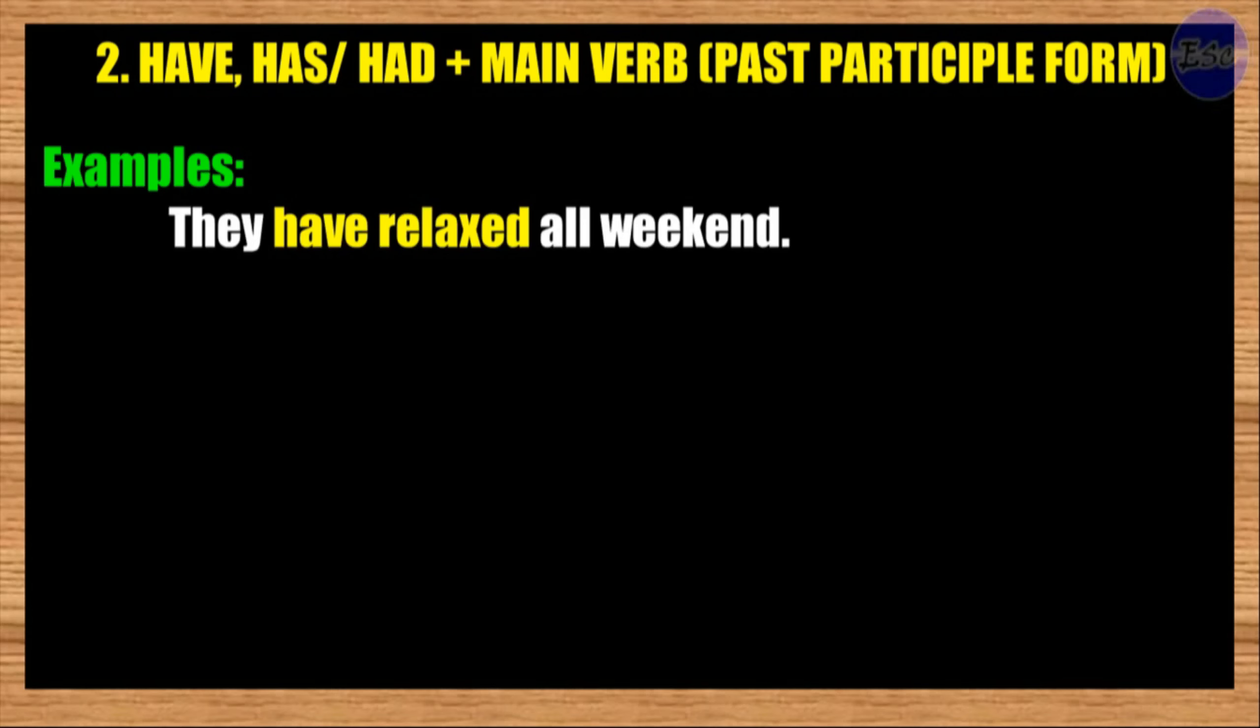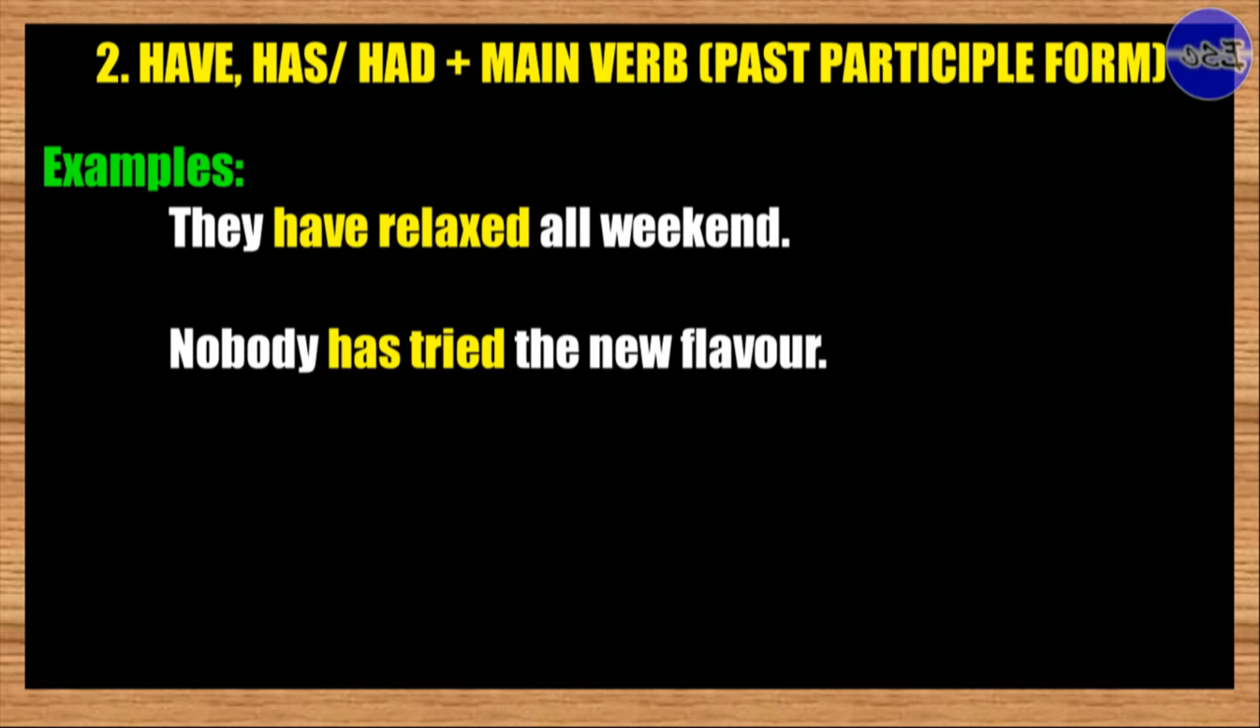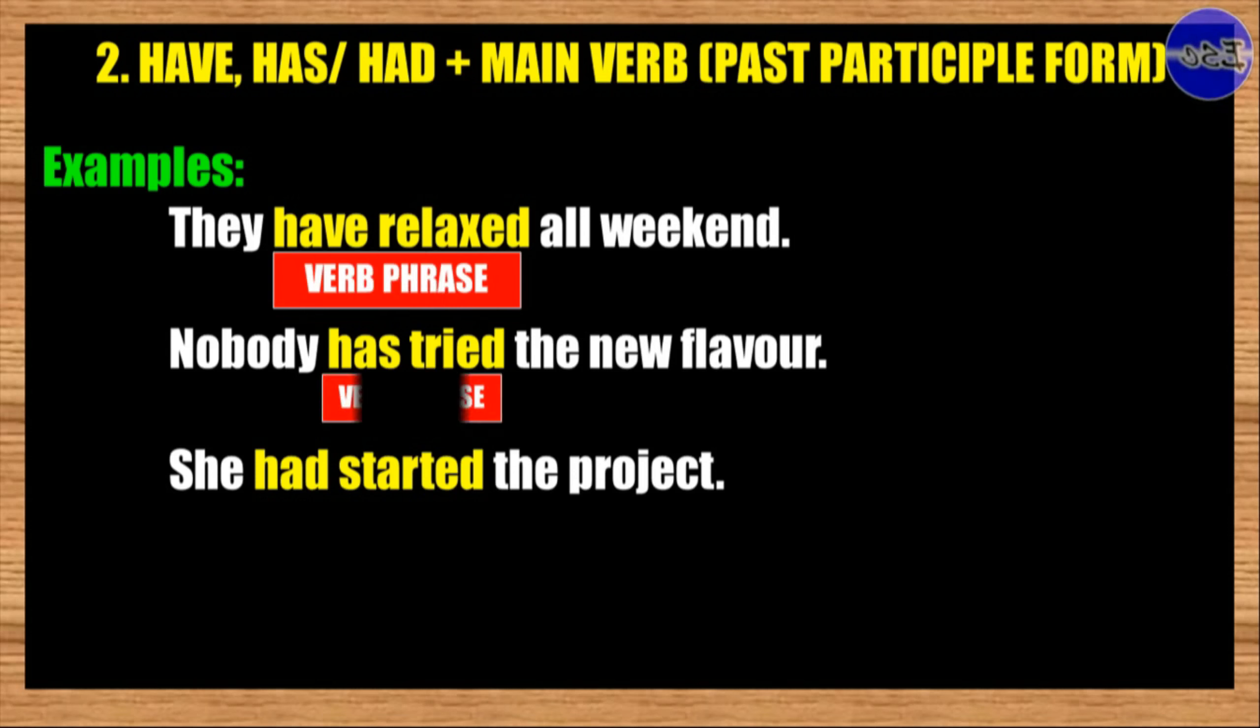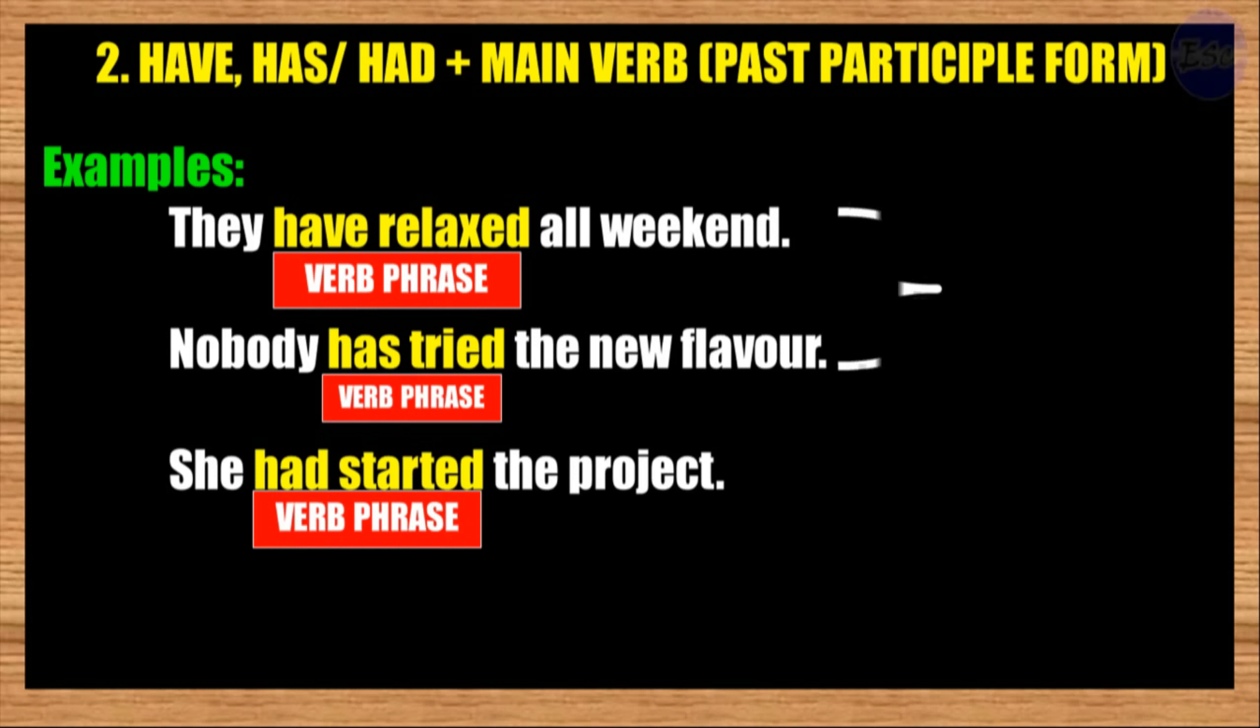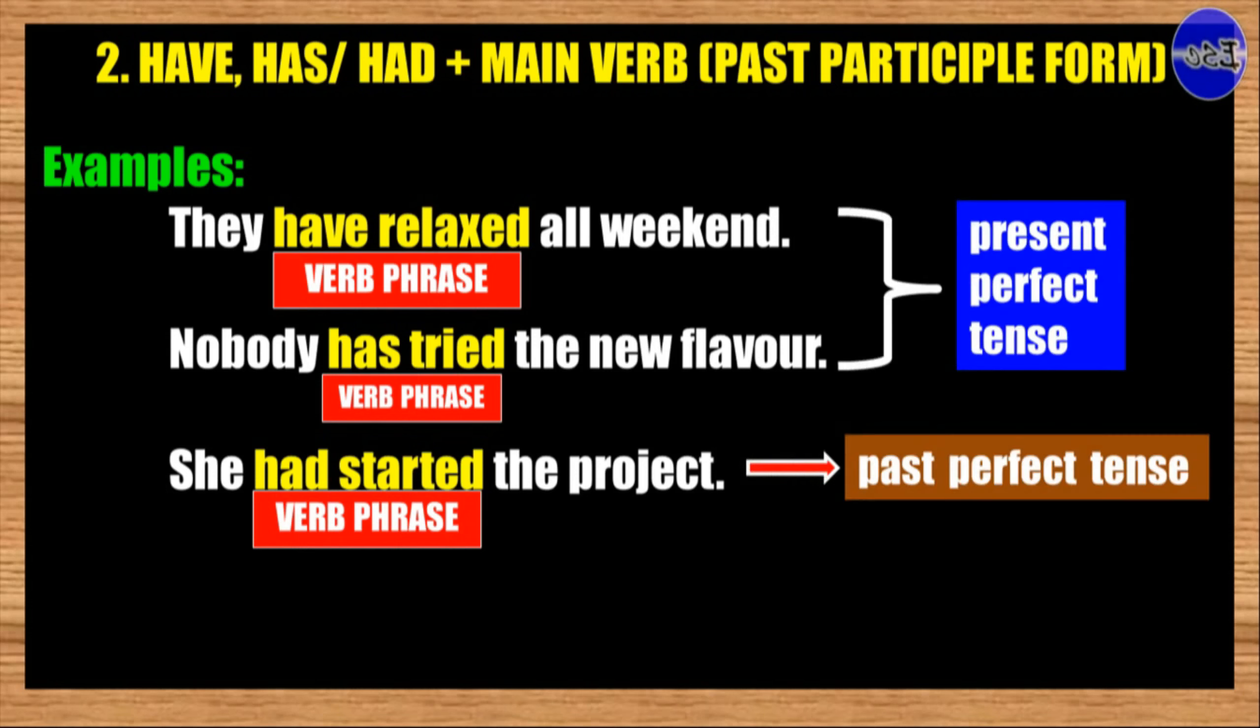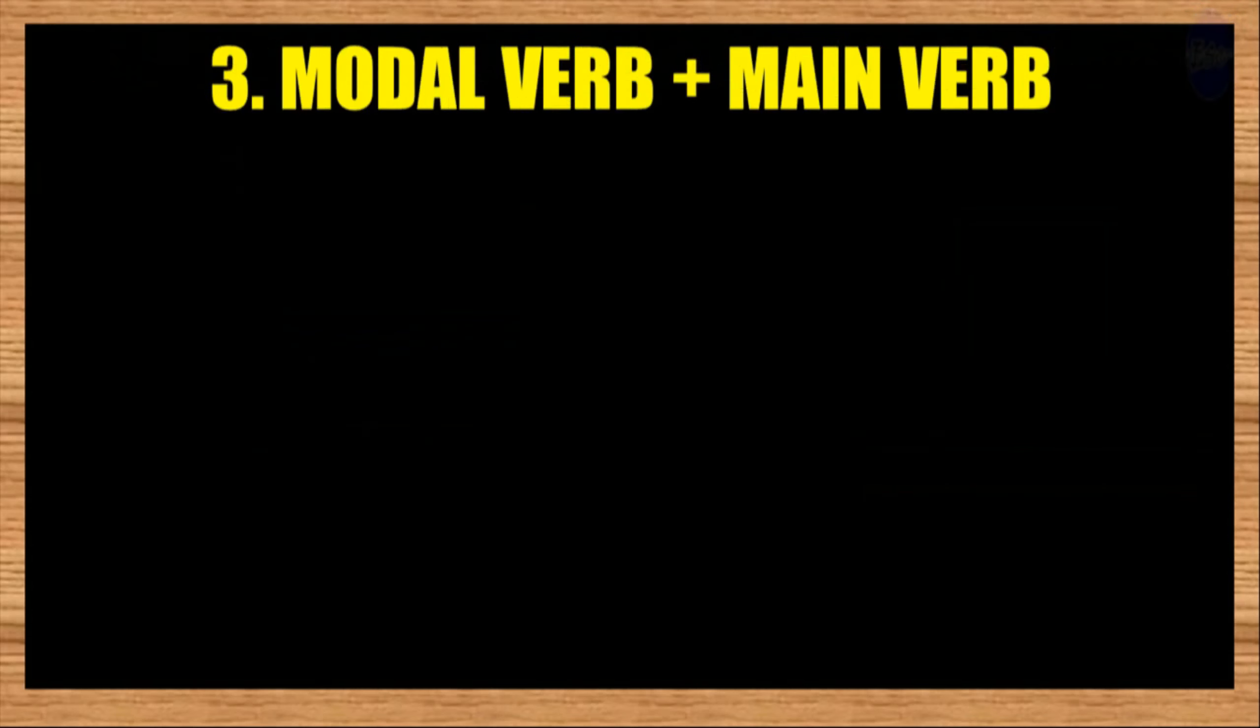Examples: They have relaxed all weekend. Nobody has tried the new flavor. She had started the project. The words 'have relaxed,' 'has tried,' and 'had started' in these examples are all categorized as verb phrases. In which, the first and the second sentence are in the form of present perfect tense. While, the third sentence is in the form of past perfect tense.